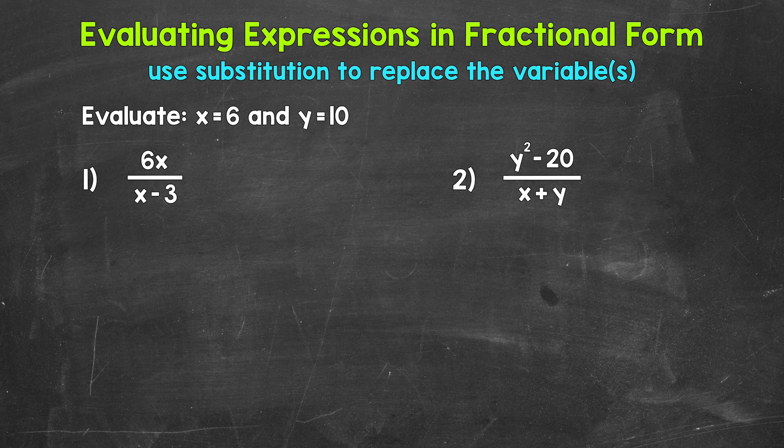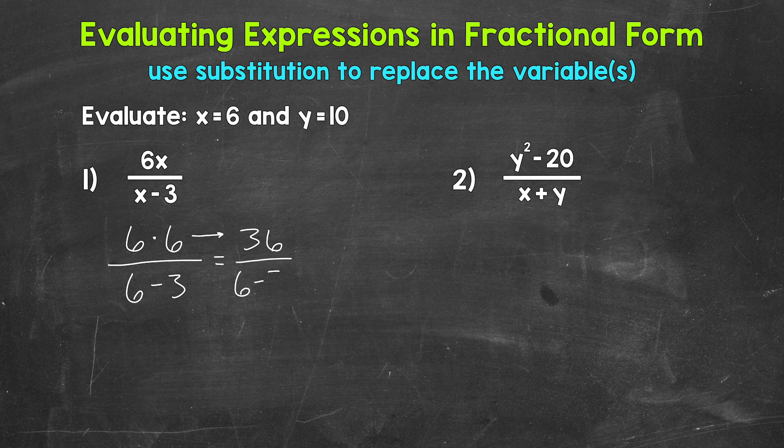Let's plug in 6 for x and rewrite this expression. We will start up top where we have 6x, which is 6 times x. That's going to be 6 times 6 over x minus 3, so 6 minus 3. Now we can evaluate, starting with the top. So we have 6 times 6. Let's work to the side here. 6 times 6 equals 36 over 6 minus 3.